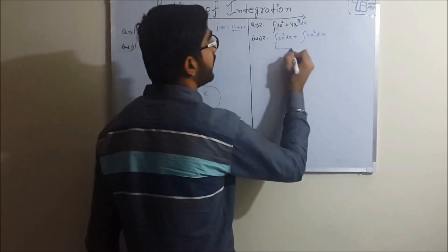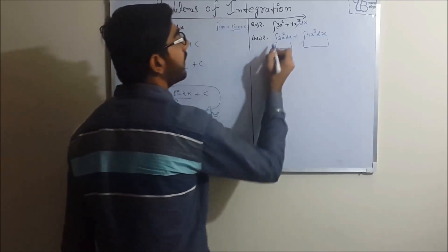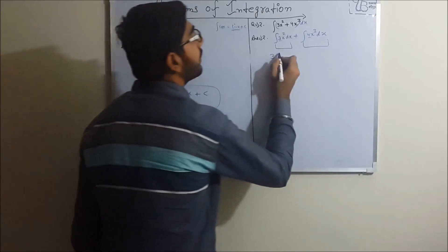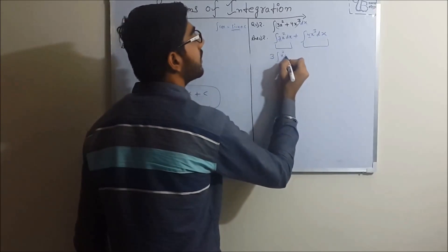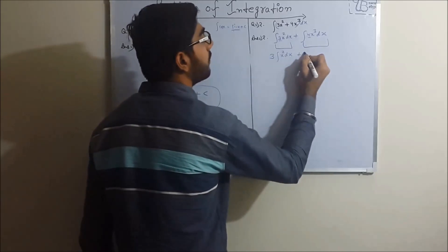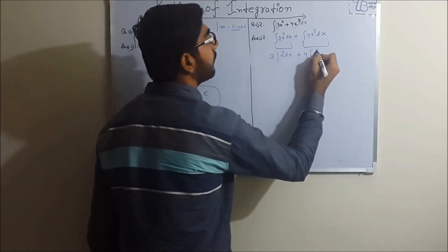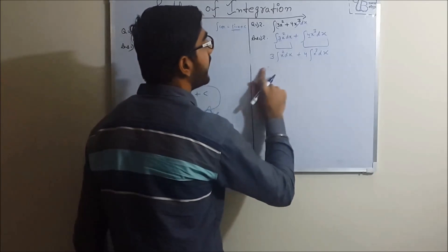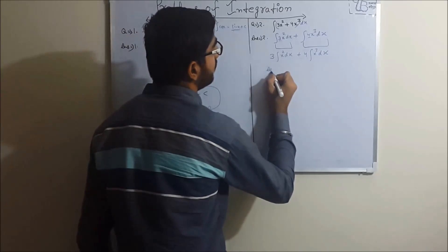So I am separating them, you can solve them separately. So 3 will come outside - whatever constant there is comes outside. So integration of x square dx plus 4 will come outside, integration of x cube dx. Now we apply this formula.